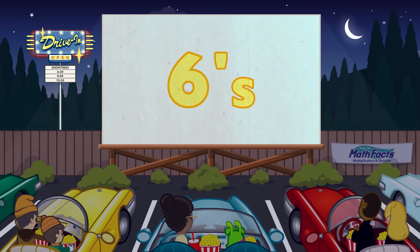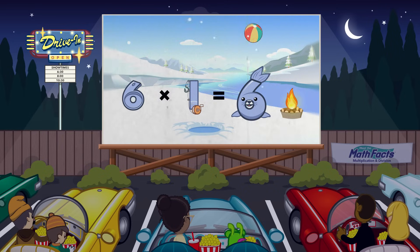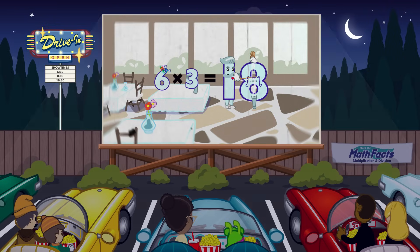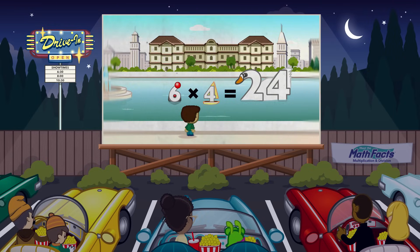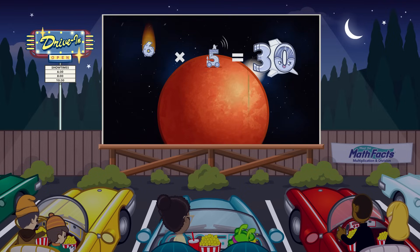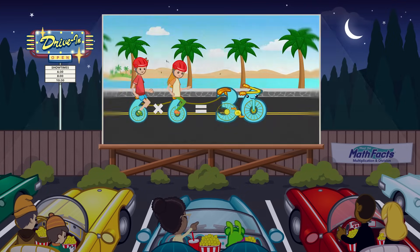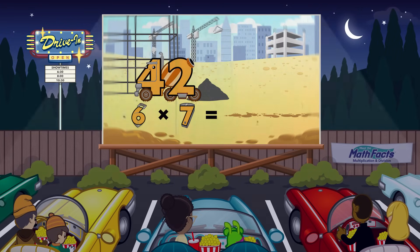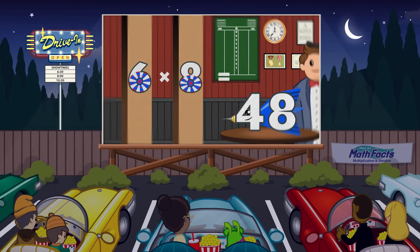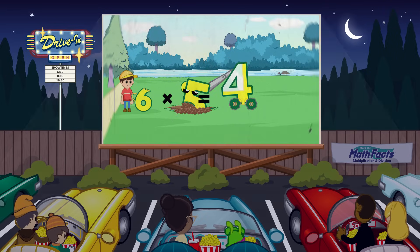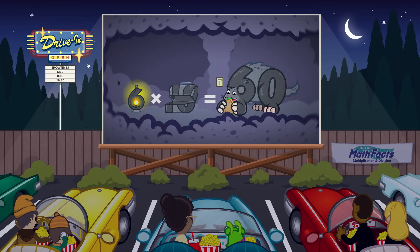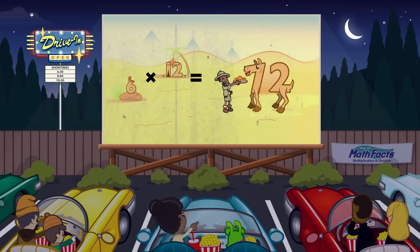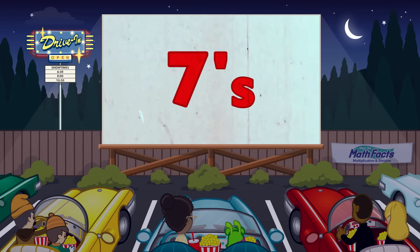Let's try sixes! 6 times 1 equals 6. 6 times 2 equals 12. 6 times 3 equals 18. 6 times 4 equals 24. 6 times 5 equals 30. 6 times 6 equals 36. 6 times 7 equals 42. 6 times 8 equals 48. 6 times 9 equals 54. 6 times 10 equals 60. 6 times 11 equals 66. 6 times 12 equals 72. Now let's try sevens!